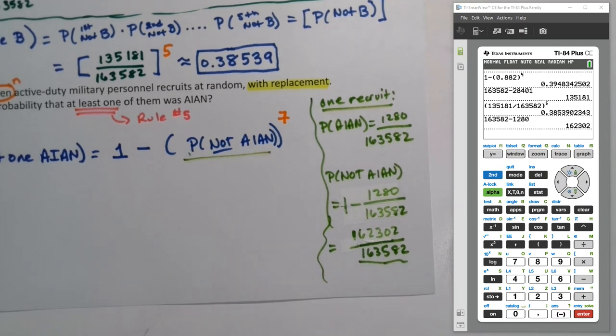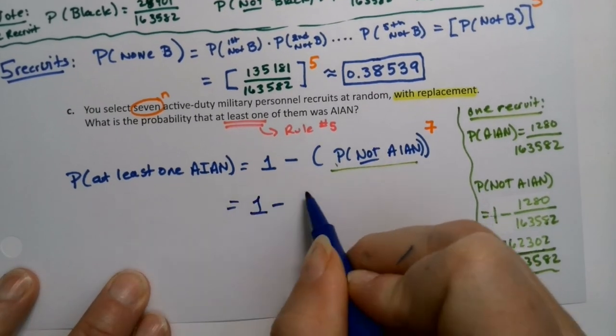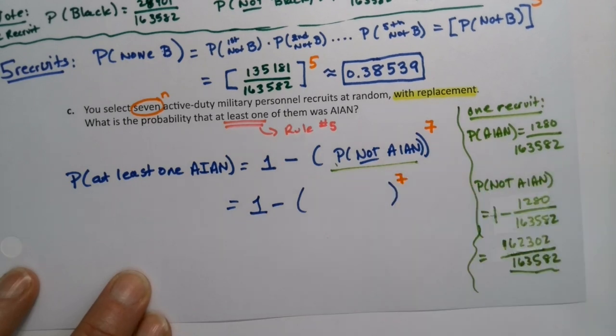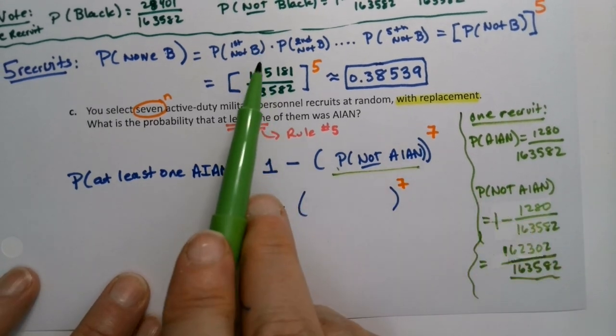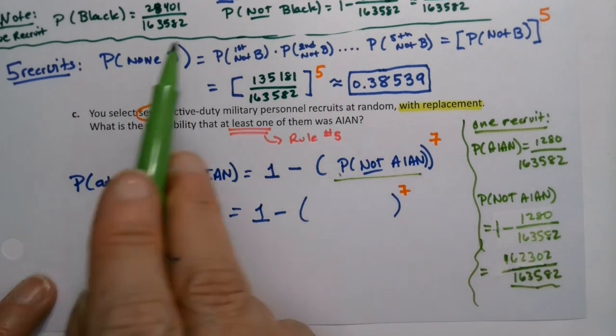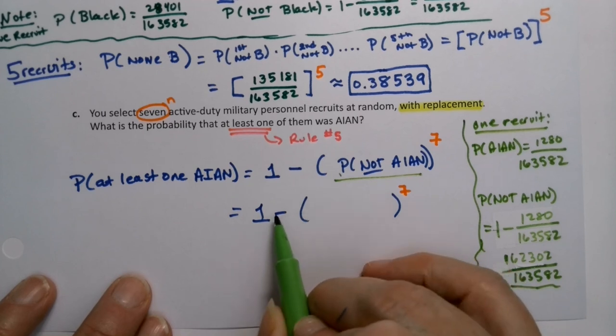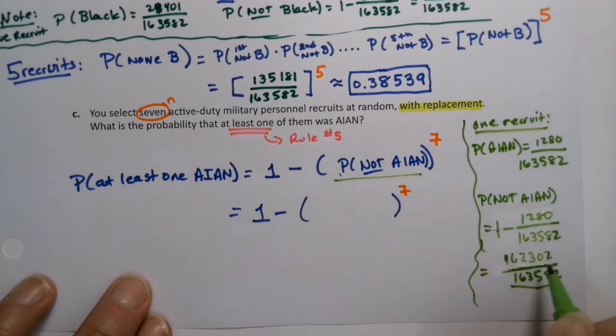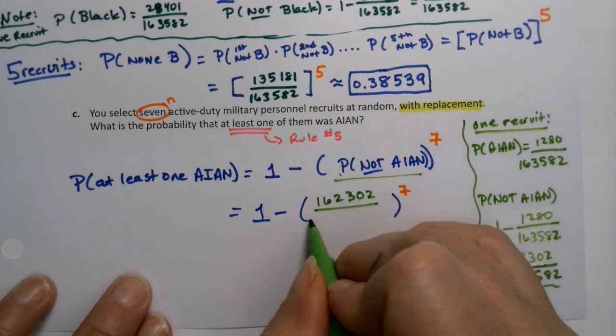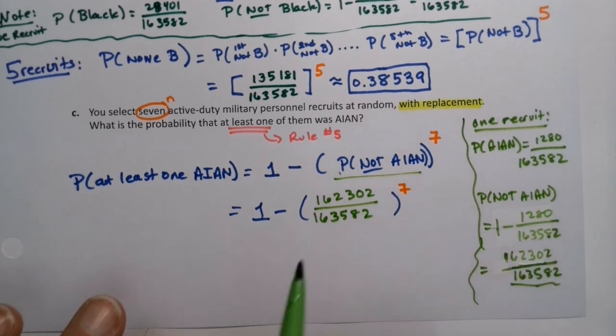Okay, so let's go do that. So this is 1 minus. These ones start off as the most difficult, but they follow a particular pattern. Actually, letter B you got to watch out for when they do none, you have to be careful because that also involves a complement rule. So 1 minus 162,302 over 163,582, and we're going to raise it to the seventh power and take it away from 1.